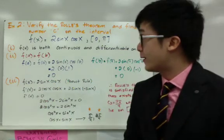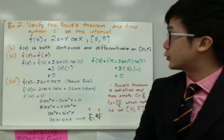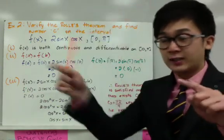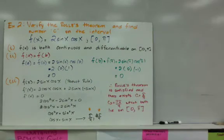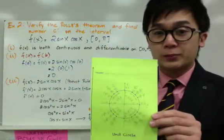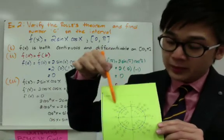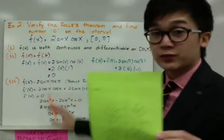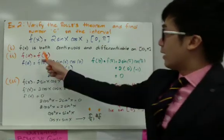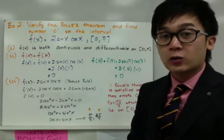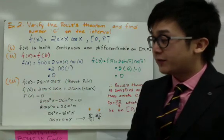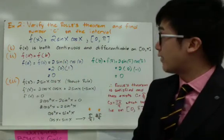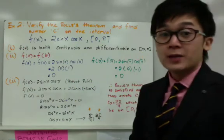Now let's apply Rolle's Theorem to a trigonometric function: f of x equal to 2 sine x cosine x on the closed interval [0, π]. On the unit circle, 0 to π represents the first half, or 0 to 180 degrees. Since the function involves sine and cosine, which are continuous functions — unlike tangent and cotangent — the first two conditions are satisfied: f of x is both continuous and differentiable on [0, π].